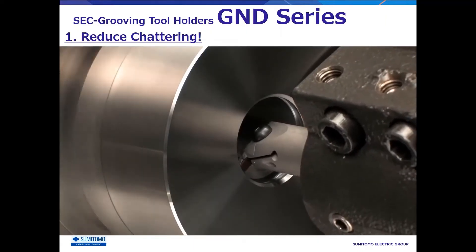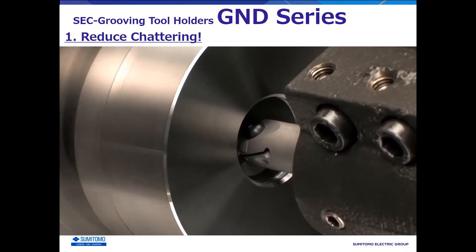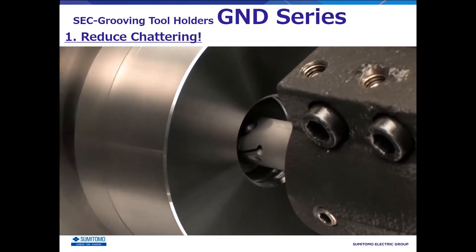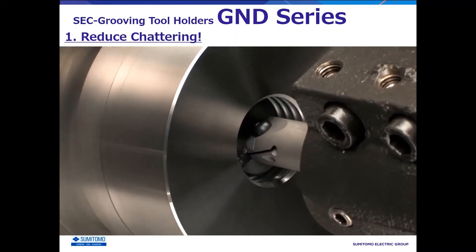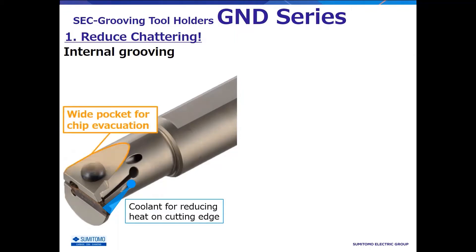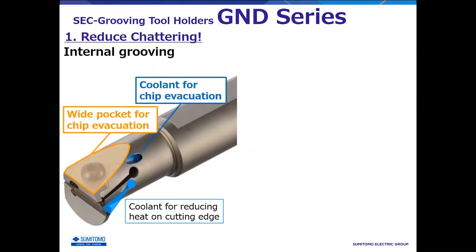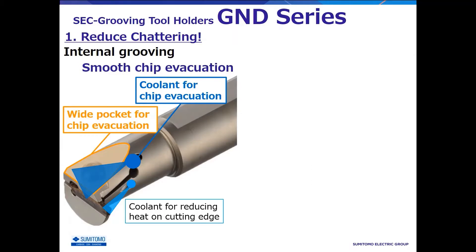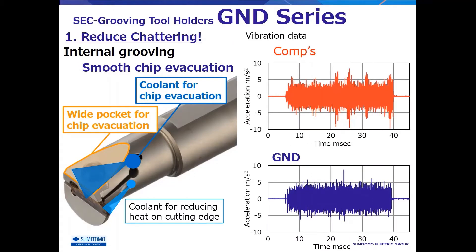In internal grooving operations like this, chattering may occur due to chips clogging inside the hole. GND internal grooving holder has an oil hole for cooling the cutting edge. In addition, it has a wide pocket for easy chip evacuation and an oil hole dedicated for chip evacuation. Thanks to these pockets and oil holes, chips can easily be evacuated. This is the actual data of vibration in internal grooving operation. Competitor's tool is unstable due to chip clogging, while the GND allows stable machining without chips being trapped.